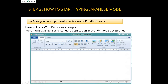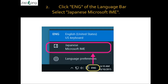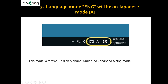Now let's start typing. Open your word processing software, email software, or any application where you want to type. We are taking WordPad as an example, which is available as a standard application in Windows Accessories. You can use it with notepad, email, or anywhere you want to type. On the right-hand bottom side, select the Japanese input method — IME (Input Method Editor). Click 'English' on the language bar and select 'Japanese Microsoft IME'.